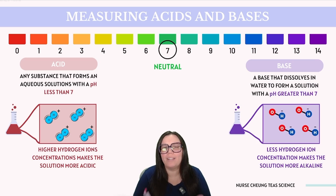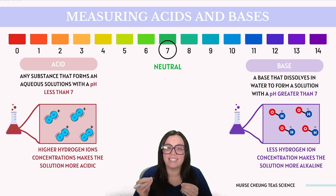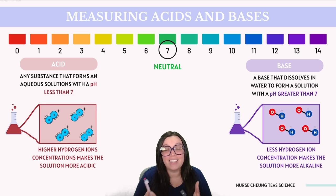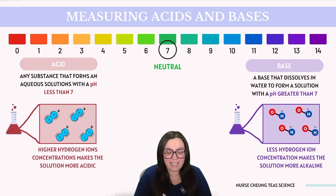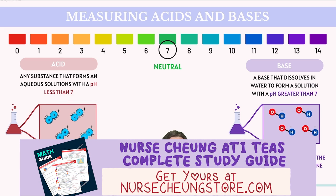Let's clarify what classifies a substance as an acid. An acid can be defined as any substance that, when dissolved in water, forms a solution with a pH of less than 7. This acidic characteristic is due to the release of hydrogen ions into the water, making the solution more acidic. For example, when hydrochloric acid, also known as HCl, is put into water, it dissolves and disassociates, releasing hydrogen ions, thus increasing the hydrogen ion concentration in the solution.